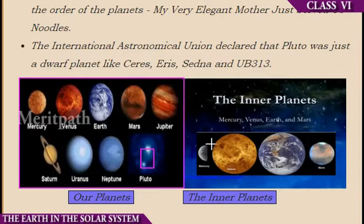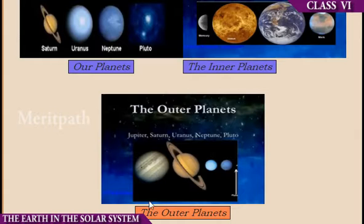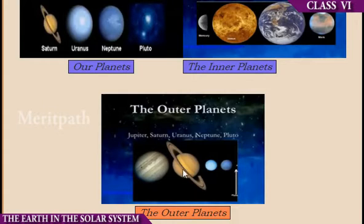These are the inner planets: Mercury, Venus, Earth, and Mars. These are the outer planets: Jupiter, Saturn, Uranus, and Neptune. Here we can see the dwarf planet Pluto.